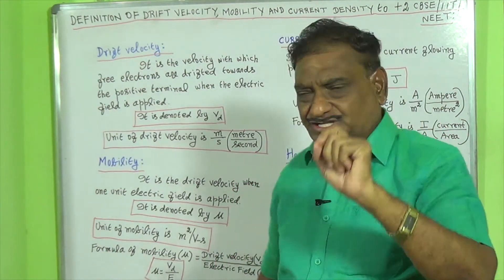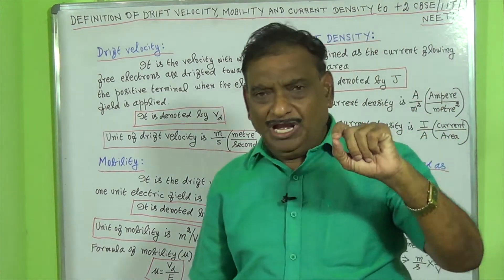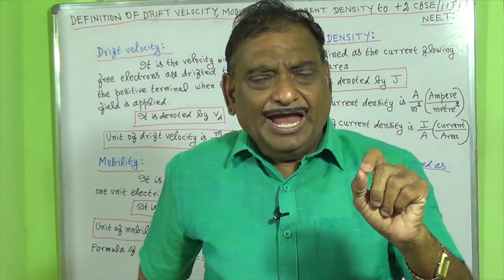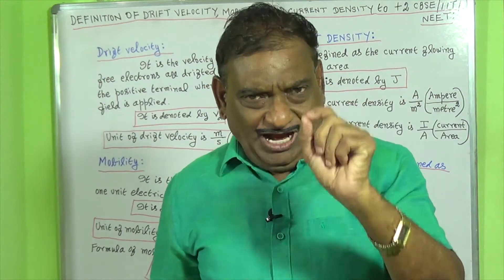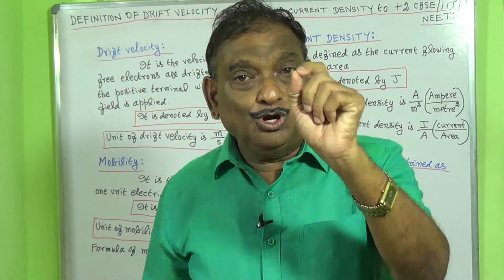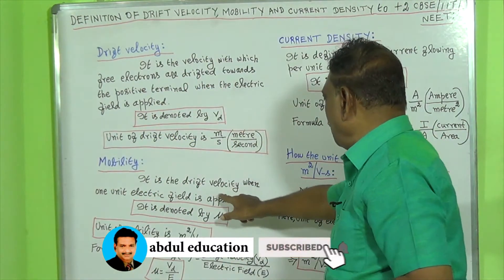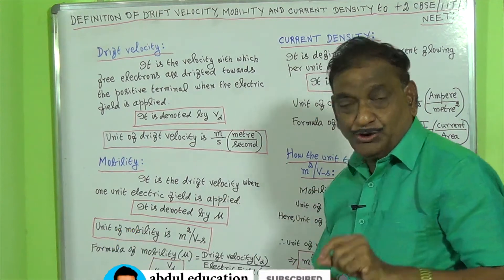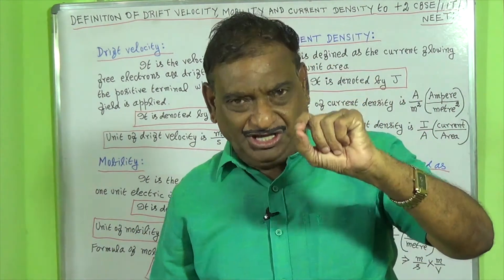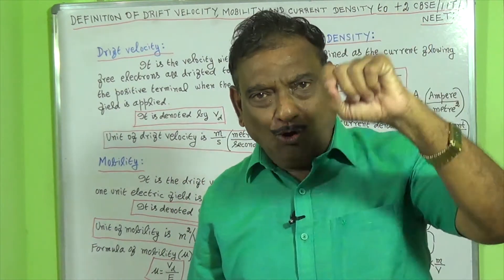Mobility is defined as the drift velocity when one unit electric field is applied. It is denoted by the letter mu (μ). The unit of mobility is meter square per volt second.